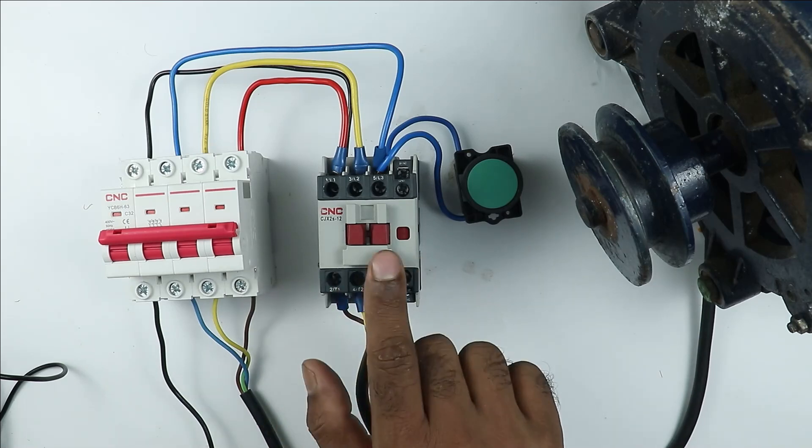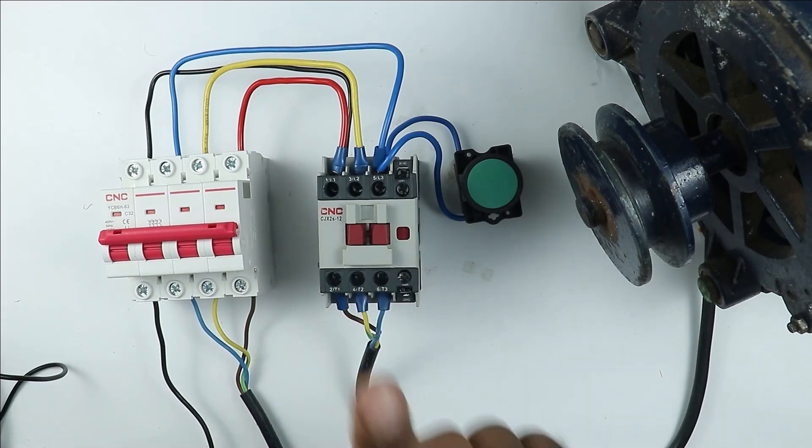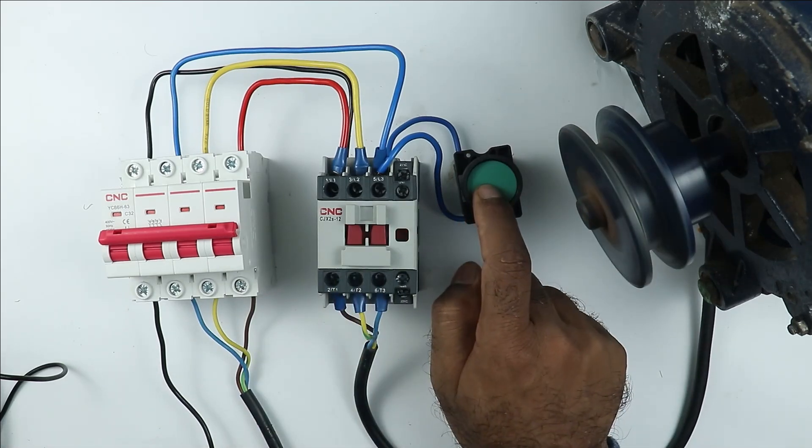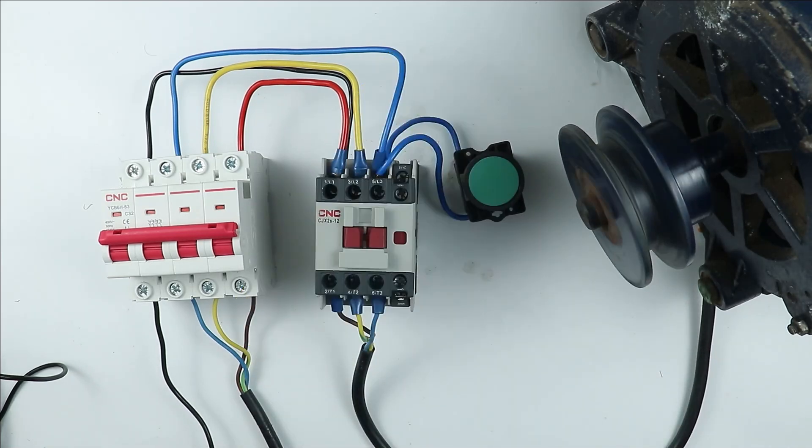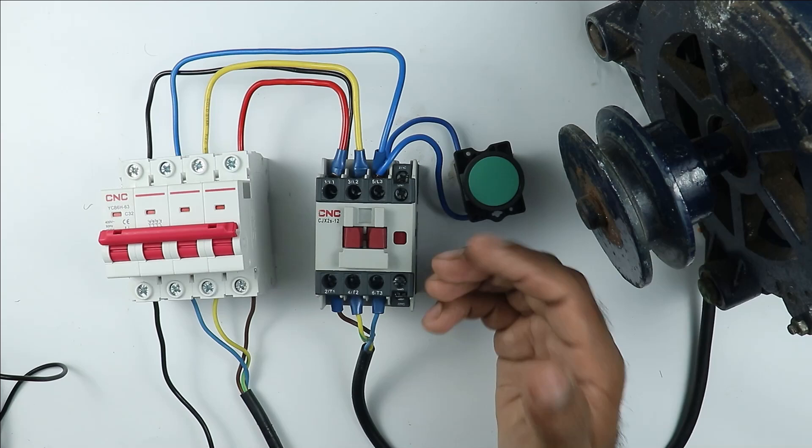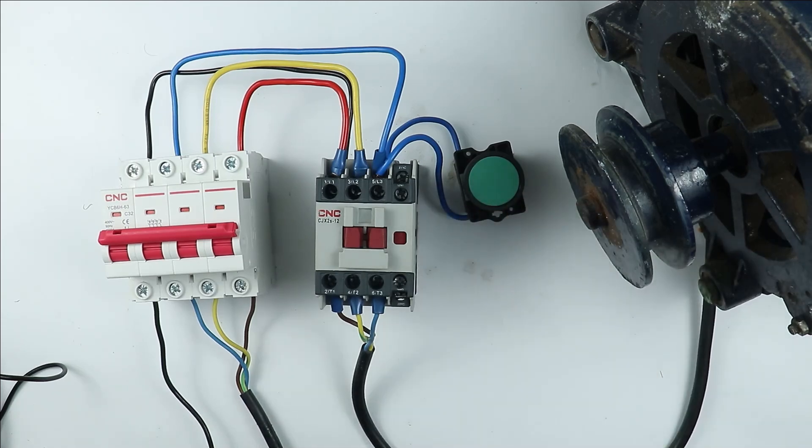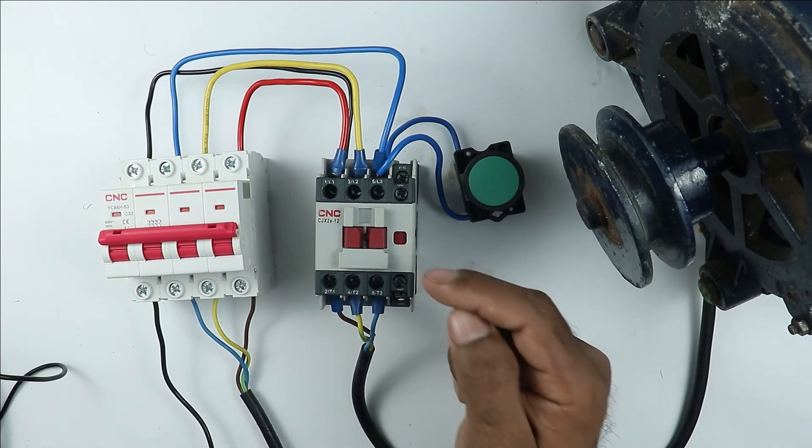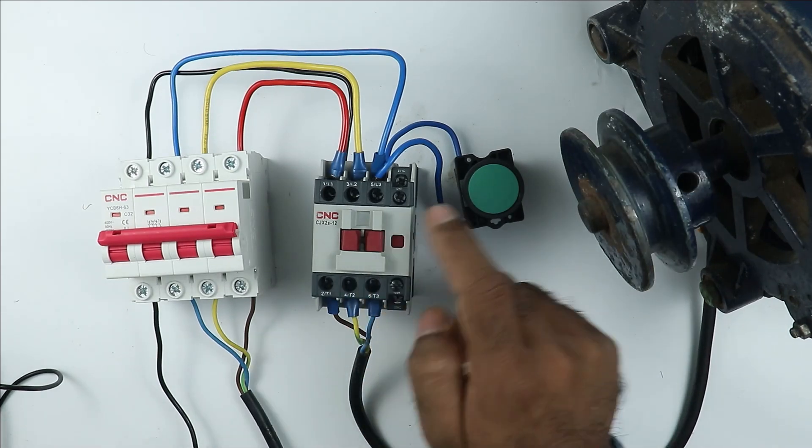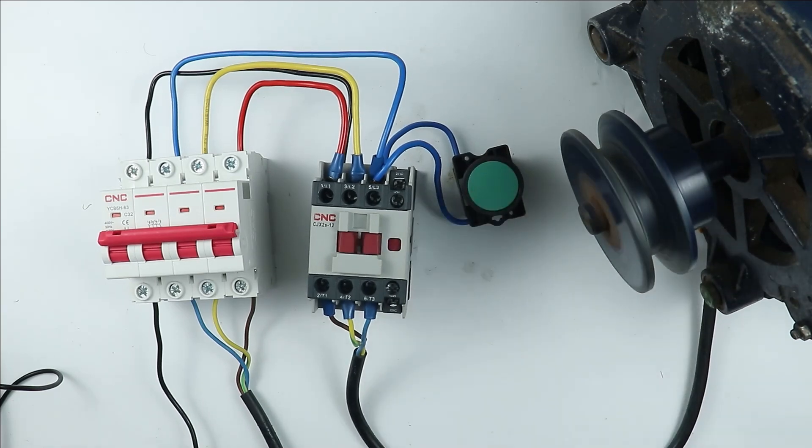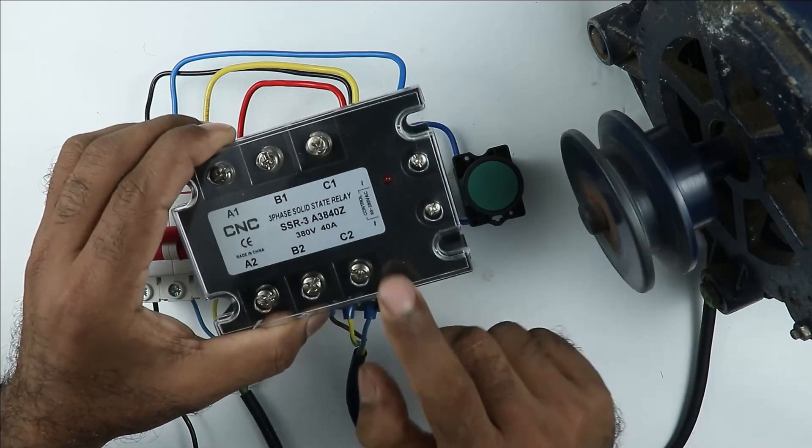As I told you when using this contactor when we turn this on sparking is generated. Now if you place this contactor in hazardous area means you want to use this where chances of catching fire is more, then in that condition this will catch fire because sparking is generated. So in any hazardous area if you want to turn on and off a load then you have to use this type of solid state relay.